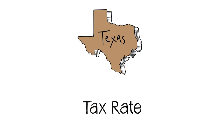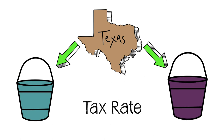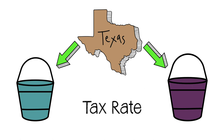In Texas, a school district's tax rate is divided into two separate parts that fund different expenses. The illustration of two buckets is often used for this example.